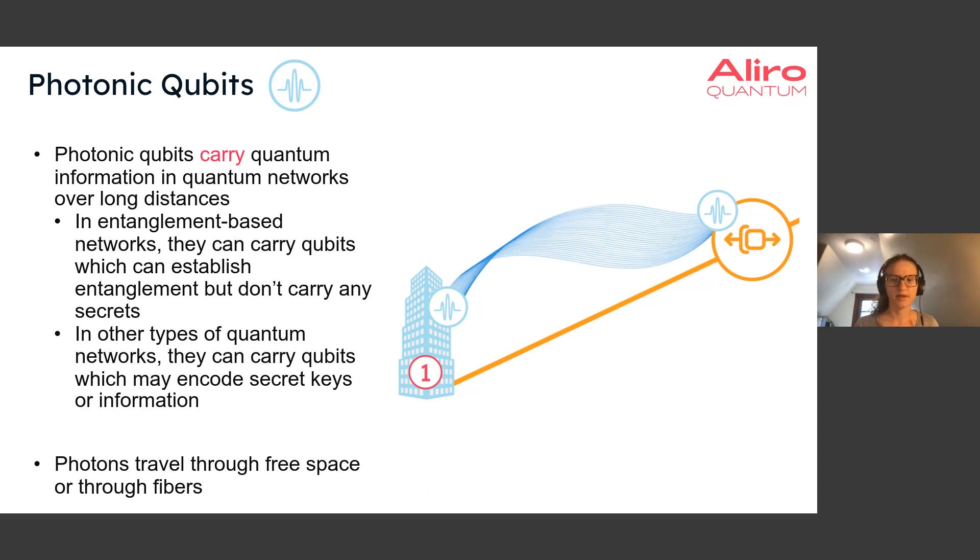And these blue lines, thin blue lines between the photons will be indicating that the photons are entangled. Of course, this doesn't mean there's any sort of physical connection between them, but just meaning that there is some shared information or shared quantum state between the two photons, where if you measure one photon, the results will be correlated with the measurement of the other photon.